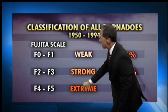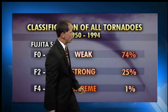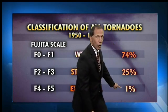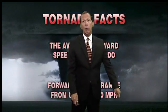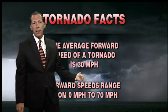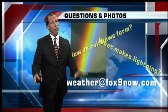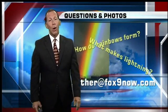F0s are those weak tornadoes. F4s and F5s are extreme tornadoes — only 1% of all tornadoes are in that extreme category, and they typically travel 30 miles per hour. So there's a lot to know about tornadoes. We do get them in Idaho, so we have to be ready in the spring.